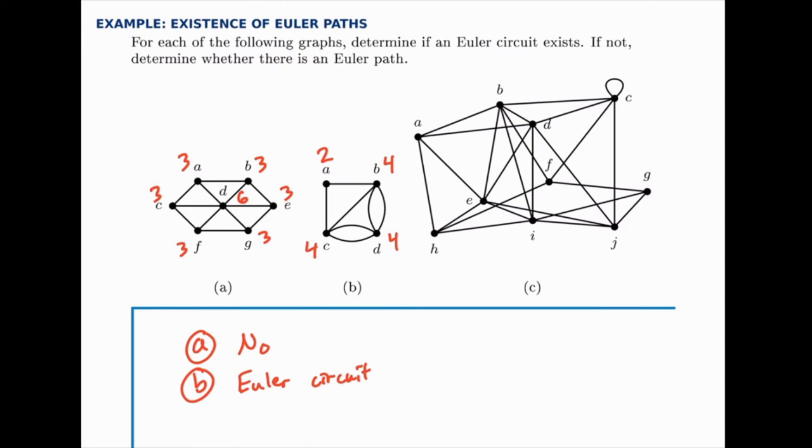Part C is a little bit more complicated just because it's larger, and it can be more confusing to count the degrees, but as long as you take it carefully, you can count the degree for each node. So for node A, for instance, the degree is 4. For node B, it's 6. For node C, it's also 6.